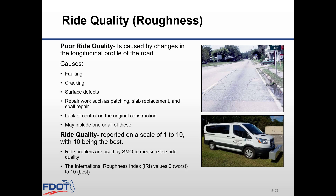Poor ride quality is caused by changes in the longitudinal profile of the road. Causes include faulting, cracking, surface effects, repair work such as patching, slab replacement, and spall repairs, as well as a lack of control during original construction. Ride quality is reported on a scale from 1 to 10, with 10 being the best. Ride profilers are used by the State Materials Office to measure ride quality. The International Roughness Index (IRI) values range from 0 for worst to 10 for best.